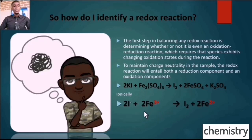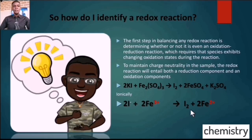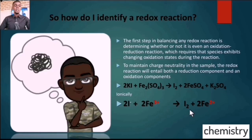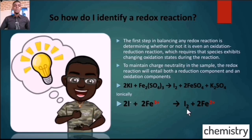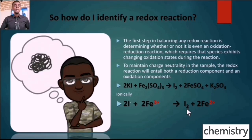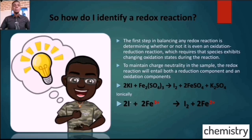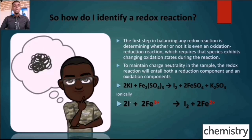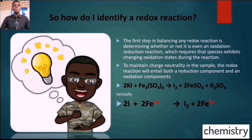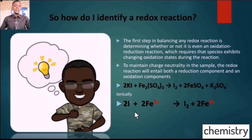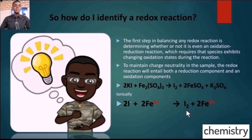Ionically, iodine is going from minus one to zero. If it is going from minus one to zero, it means it is oxidation — loss of electron. To better understand this, use your number line. If a chemical species is changing its oxidation state moving towards the positive side of the number line, it is oxidation. If it is moving towards the negative side, it is reduction. Iodine goes from minus one towards zero — positive direction — so it's oxidation. Iron goes from plus 3 towards plus 2 — negative direction — so it is reduction.